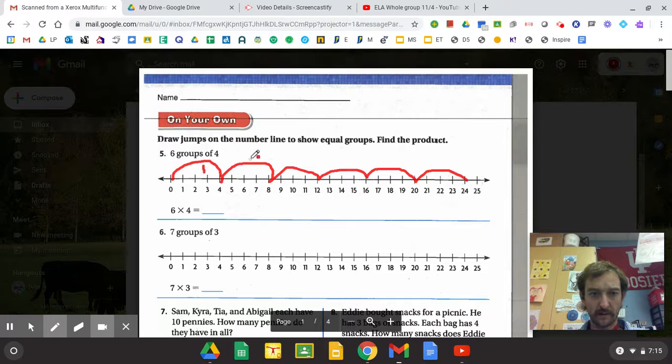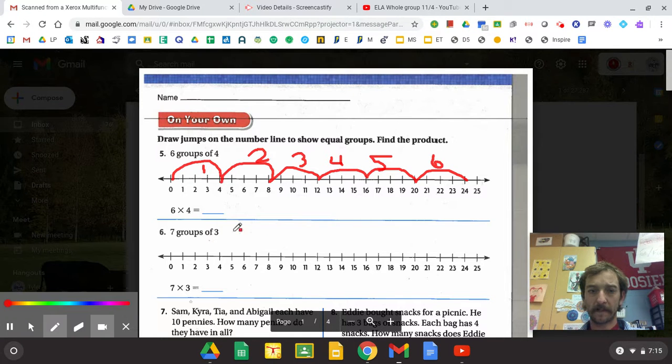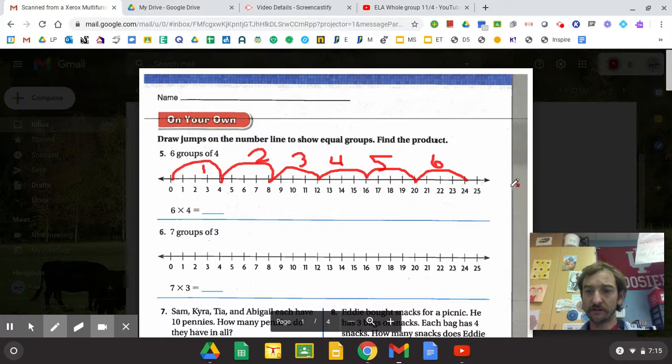And that is one, two, three, four, five, six. So that's six jumps or six groups of four and I ended at twenty-four. So my answer is going to be twenty-four.